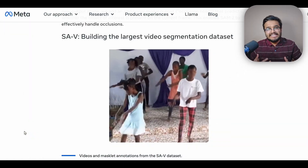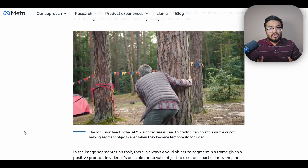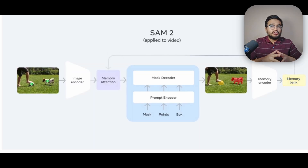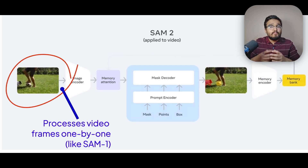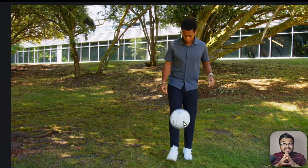A huge challenge for processing videos comes from their temporal or sequential nature. Objects change as the scene unfolds — they may deform, shift, get darker, brighter, or even be occluded by other objects over time. SAM2 consumes individual frames one by one and maintains a memory bank that stores information about previously generated output masks. This memory bank models the dynamic nature of the input video, while the rest of the pipeline remains similar to the original SAM1 model.